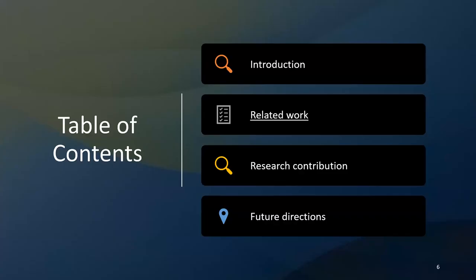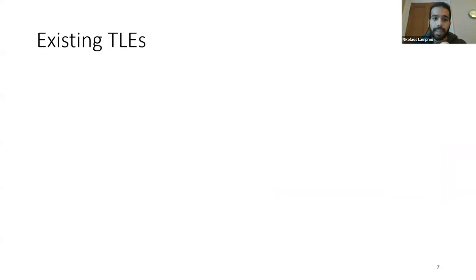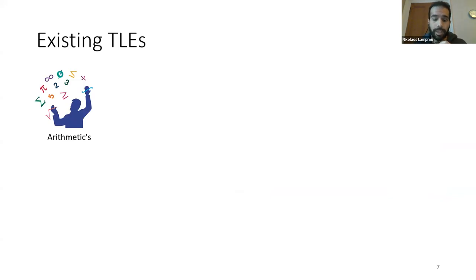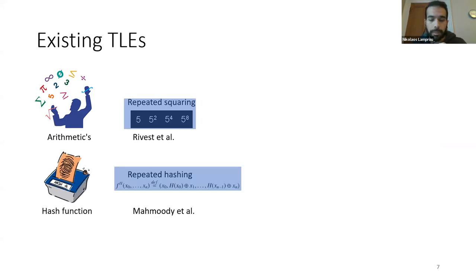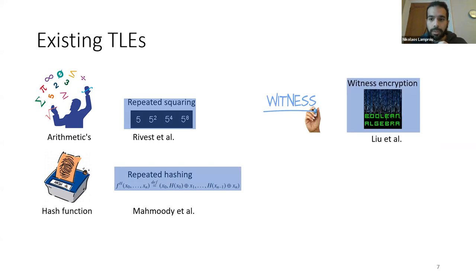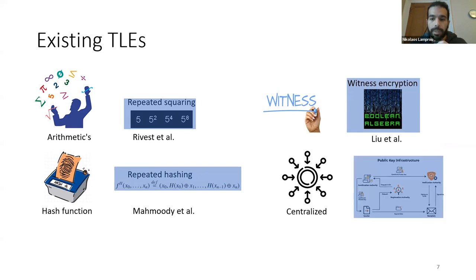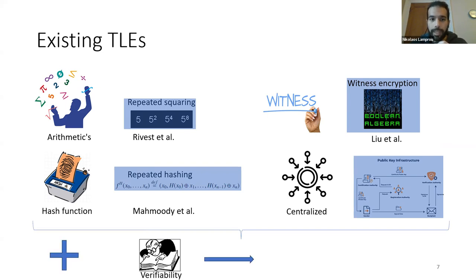Regarding related work, the existing constructions of TLE are based on arithmetics such as repeated squaring, hash function repeated hashing, witness encryption using Boolean algebra, or centralized constructions based on public infrastructure. The generalization — if we provide a mechanism of verifying the time-proof — is the verifiable delay functions.